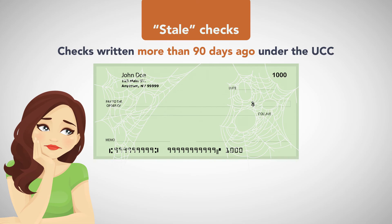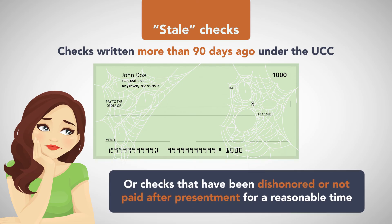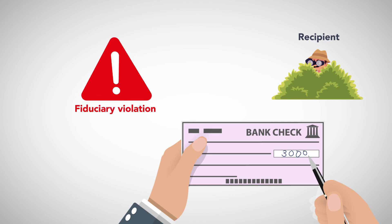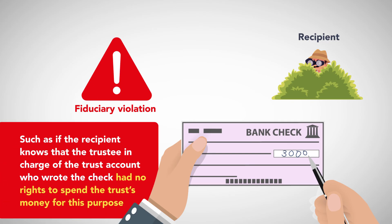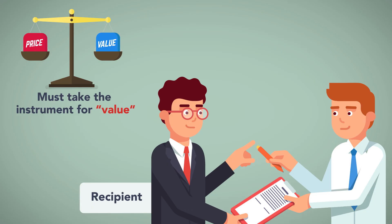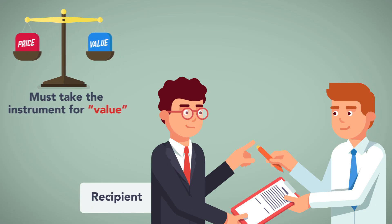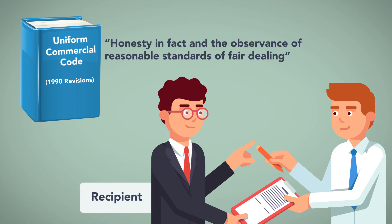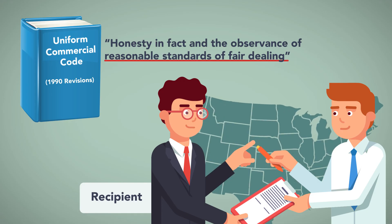Holders of stale checks — which means checks written more than 90 days ago under the UCC, or shorter if stated on the instrument — or checks that have been dishonored or not paid after presentment for a reasonable time, cannot be holders in due course. Even if the instrument itself is sound, if the recipient has knowledge of a fiduciary violation that went into the check's creation — such as if the recipient knows that a trustee who wrote the check had no rights to spend the trust's money for that purpose — he is likewise not an HDC. To be an HDC, the recipient must take the instrument for value, which generally means fair market value. The UCC formally required honesty in fact in the conduct or transaction concerned, which means the deal must have been done in good faith. This requirement was expanded under the 1990 revisions to honesty in fact and the observance of reasonable standards of fair dealing. This addition of an objective component was adopted by some states, but rejected by others.